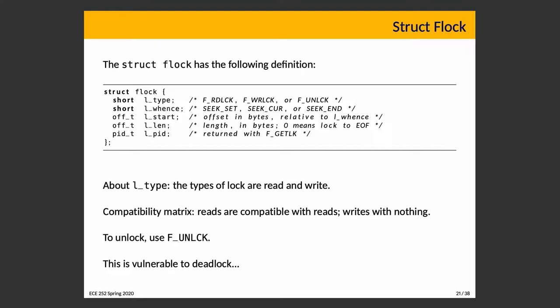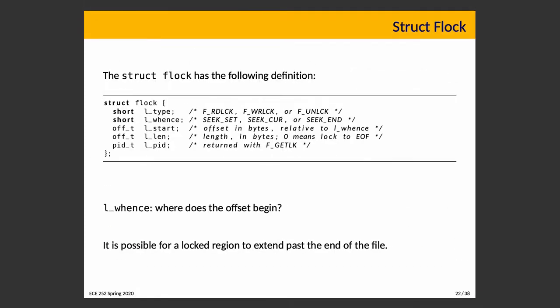For the whence field, SEEK_SET means from the start of the file, and the start argument is the offset from that starting point. If you choose whence as SEEK_SET and start as 1000, the lock begins at 1000 bytes past the start of the file. SEEK_END means from the end of the file, so a start of −1000 means 1000 bytes before the end. You can even lock after the end of the file, which means you are reserving the exclusive right to append to that file.